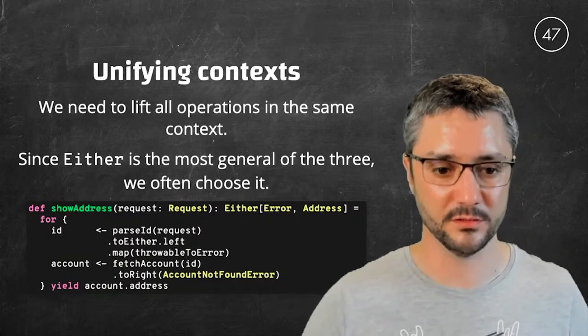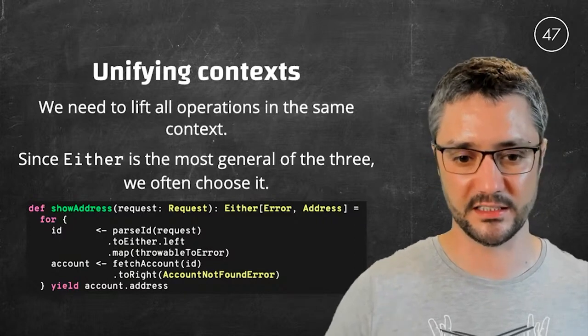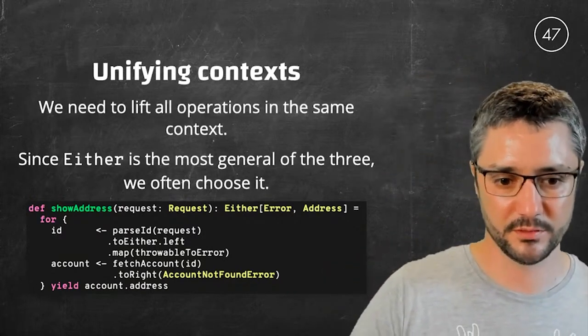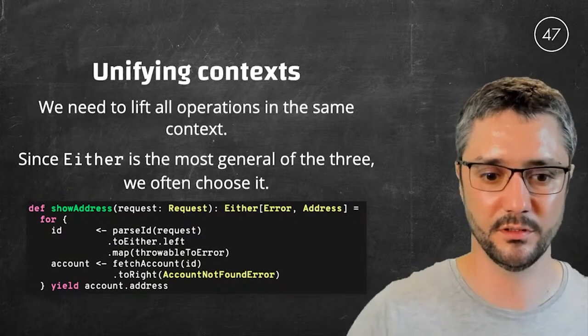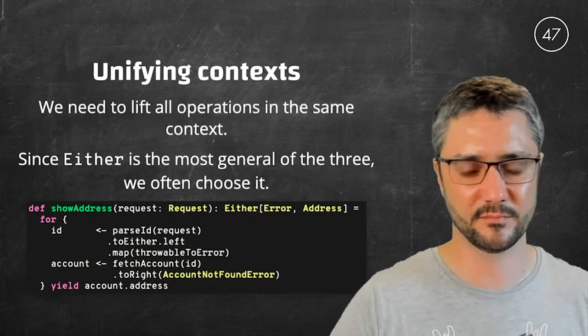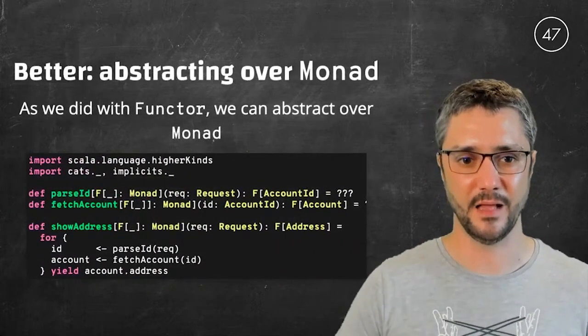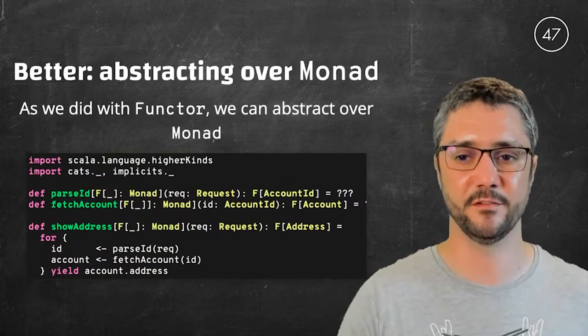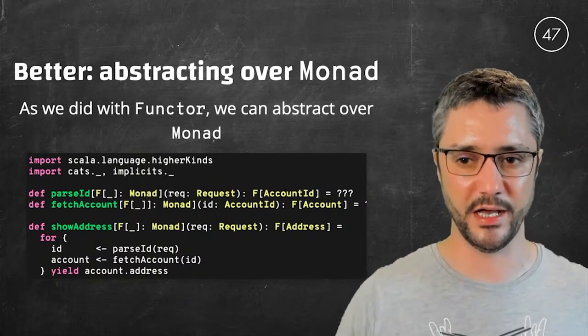So one solution around this problem is to unify everything in the same error context. And in fact, option and try can always be translated into an either. Because, as I said, either is more general than option or try. So, for example, the code displayed on the slide would translate the try result of parseID into an either, and the option result of fetchAccount into an either. So that would work. But that's quite a lot of boilerplate. So there is something slightly better we can do. And it is to abstract over monad. As we abstracted over functor previously, we can abstract over monad. We still must have only one monad, one context. But by doing this, we can delay the choice of the concrete monad to the latest possible.